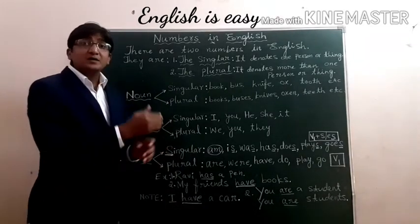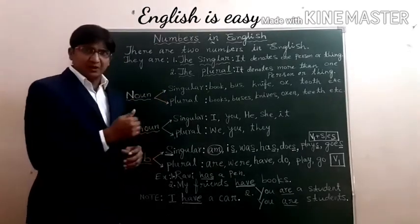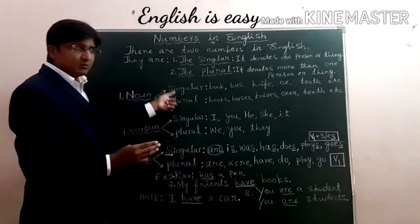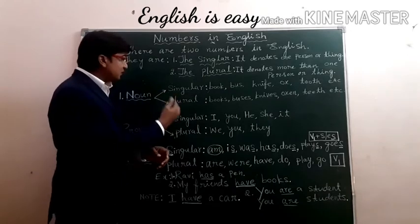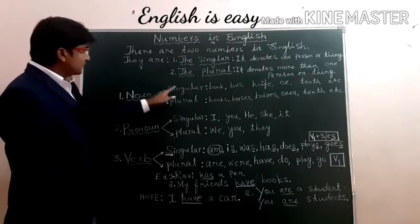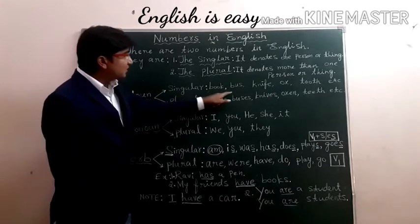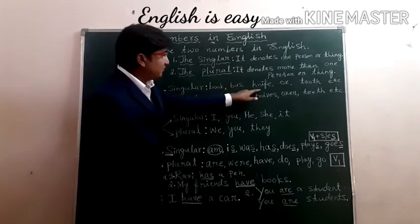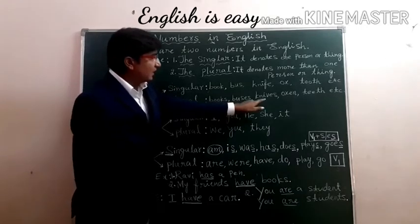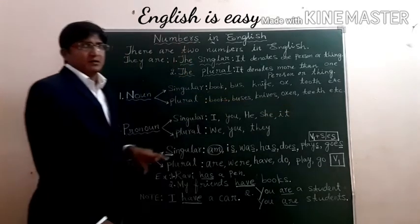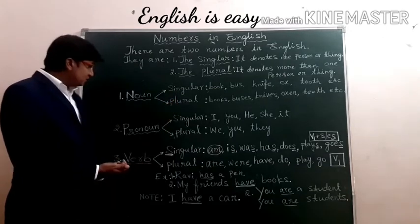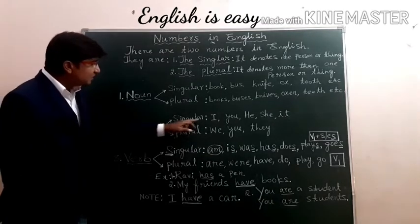Now, we have already learned about parts of speech. There are eight parts of speech in English. Out of these eight, only for three parts of speech we have these singular and plural numbers. We don't have them for other parts of speech. For what do we have singular and plural numbers? The first one is noun. Singular and plural — and here I have written a few examples: book, bus, knife, ox, tooth, etc. We all know very well about noun, that noun has singular and plural. And now, come to pronoun. Even in pronoun, we have singular and plural.